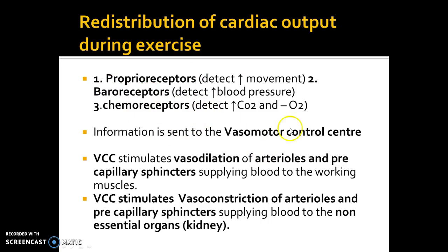To summarise: receptors send signals to the vasomotor control center, which stimulates vasodilation — widening of the two vessels supplying your muscles with blood. On the flip side, the precapillary sphincters and arterioles supplying the non-essential organs such as the kidney and liver vasoconstrict. That is the key concept for this lesson.